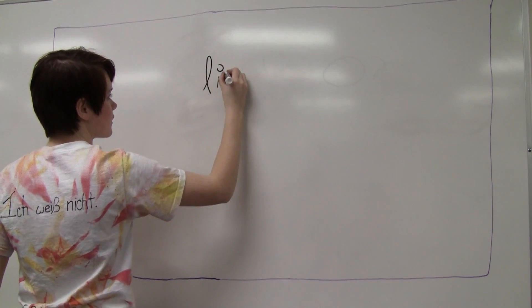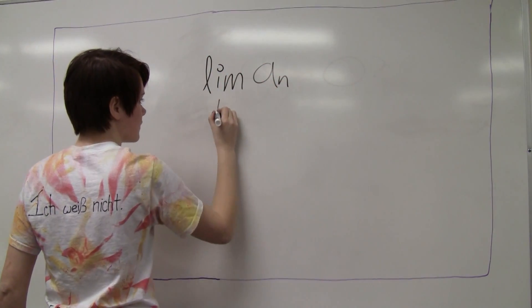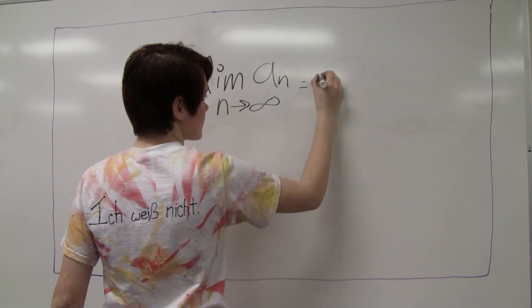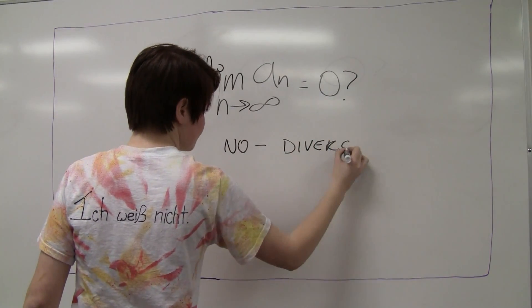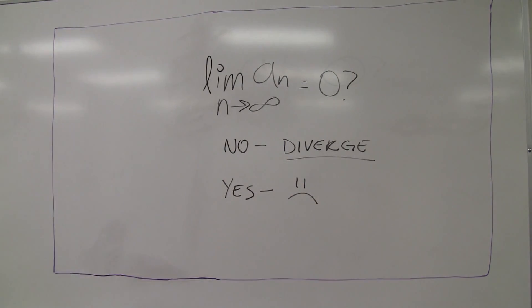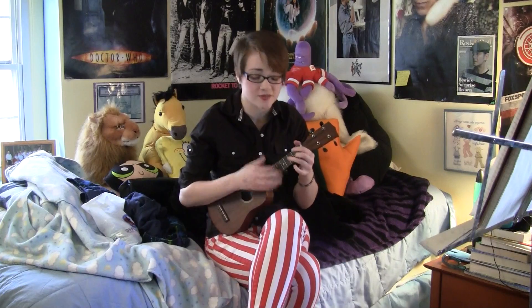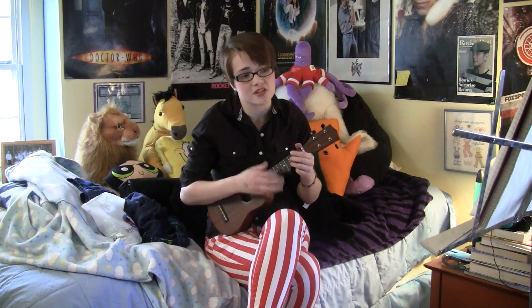When you test for divergence, the first place you should go: as n gets bigger and bigger, does the function go to 0? If the answer's no, the function diverges and you're done. But if it's yes, I'm sorry, more work needs to be done. Get a test, I'm serious, it'll make you weary. Test for divergence with a sense of urgency.